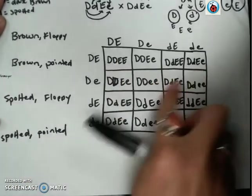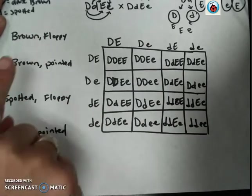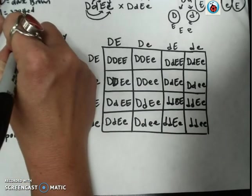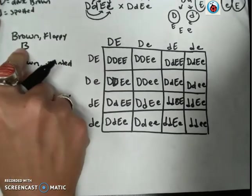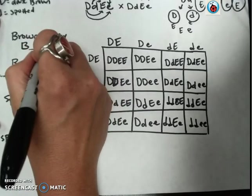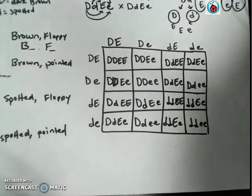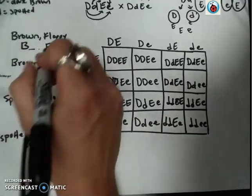Okay, so now our job is to search through these offspring to find out the phenotypic ratio. So for brown and floppy, to be brown fur, you'd have to have one dominant allele for brown and one dominant allele for floppy. So now we're going to find all of the offspring that have at least one copy.